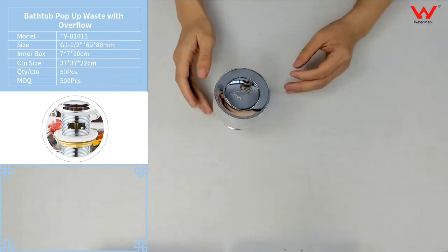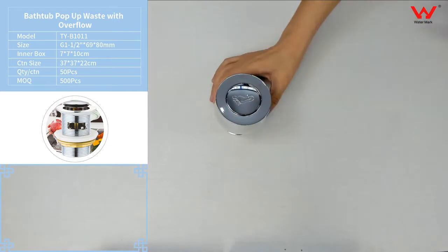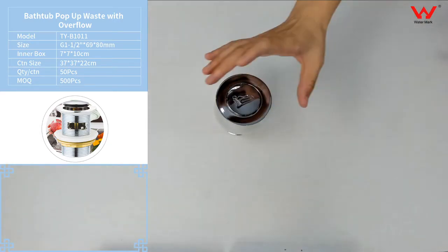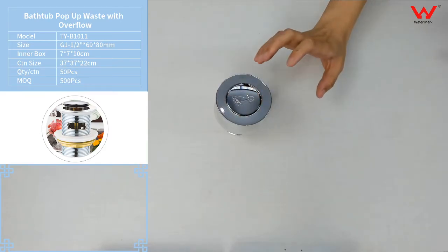After talking about the product specification, I would like to talk about the product features. Number one is diamond chrome plating and you can see the surface of the chrome plate is very diamond, very diamond chrome plating.